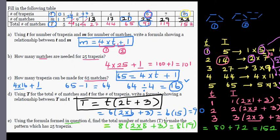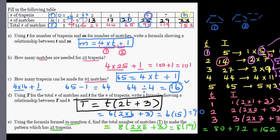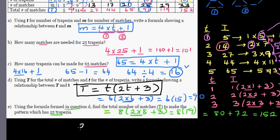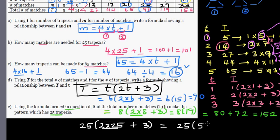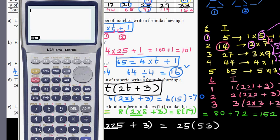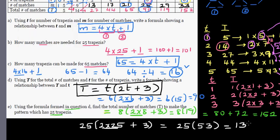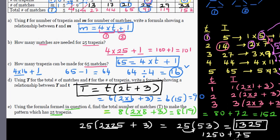Finally, use the formula to find the total number of matches to make up to the twenty-fifth trapezia. That is twenty-five times (two times twenty-five plus three), which is twenty-five times fifty-three. Twenty-five times fifty is one thousand two hundred and fifty, and twenty-five times three is seventy-five, giving one thousand three hundred and twenty-five matches.